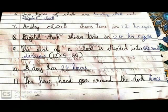The day has 24 hours. The hour hand goes around the clock twice in one day. There are two meridians: A.M., which means before noon, and P.M., which means after noon.